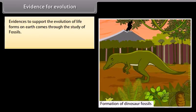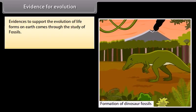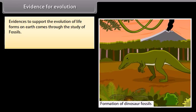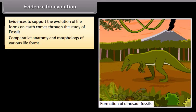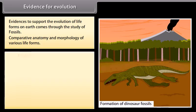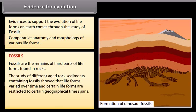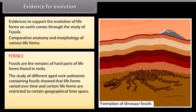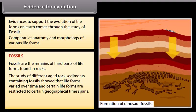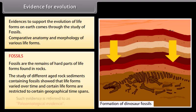Evidence for Evolution: Evidence to support the evolution of life forms on Earth comes through the study of fossils and comparative anatomy and morphology of various life forms. Fossils are the remains of hard parts of life forms found in rocks. The study of different aged rock sediments containing fossils showed that life forms varied over time, and certain life forms are restricted to certain geographical time spans. Such evidence is referred to as paleontological evidence.